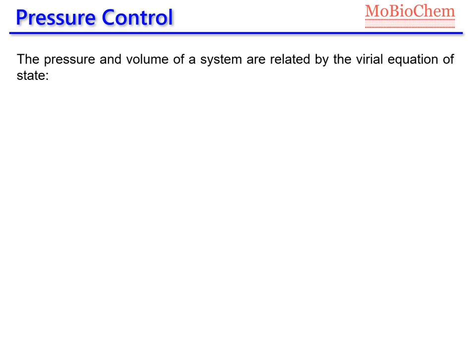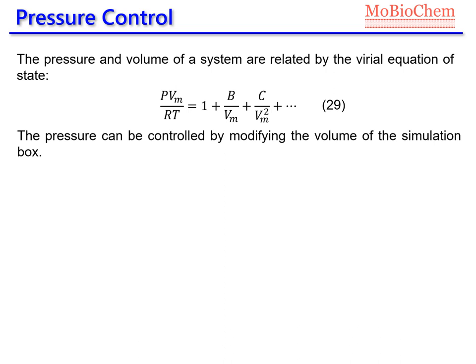Finally, let's see how we can control the pressure. The pressure and the volume of our system are related by the Virial equation. Here we have the equation where we have the pressure, the molar volume, the ideal gas constant, and the temperature. The ideal gas equation is PV/RT equal to 1. But the Virial equation introduces additional terms which take into account interactions between the atoms in our system. The important thing here is that the pressure is related with the volume in our system. In the same way we can control the temperature by modifying the velocities of our atoms, we can also control the pressure by modifying the volume of our simulation box. This is the spirit of most of the barostats.